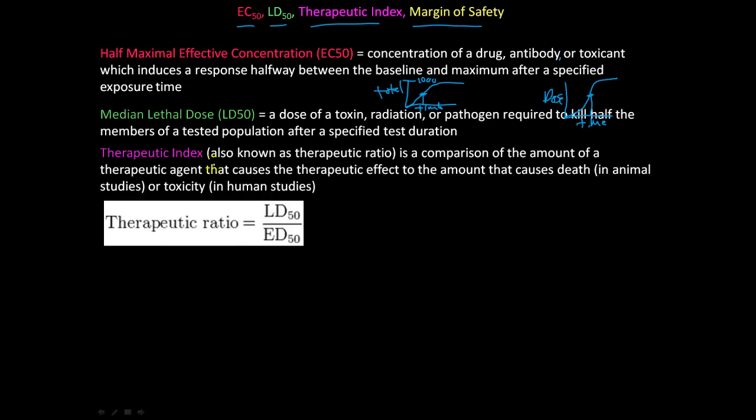So therapeutic index, which is also known as therapeutic ratio, is a comparison of both of these. It's a comparison of the amount of therapeutic agent that causes a therapeutic event to the amount that causes death or toxicity in human studies. So therapeutic ratio is LD50 over ED50. That's what therapeutic index is.